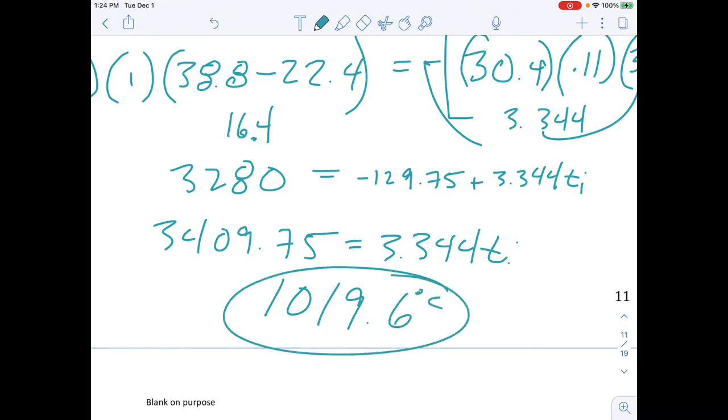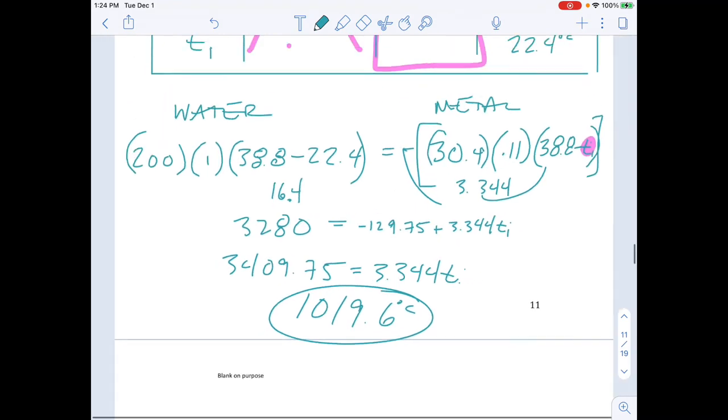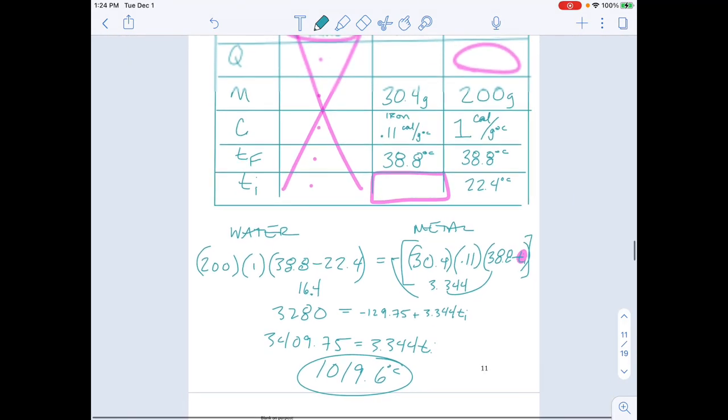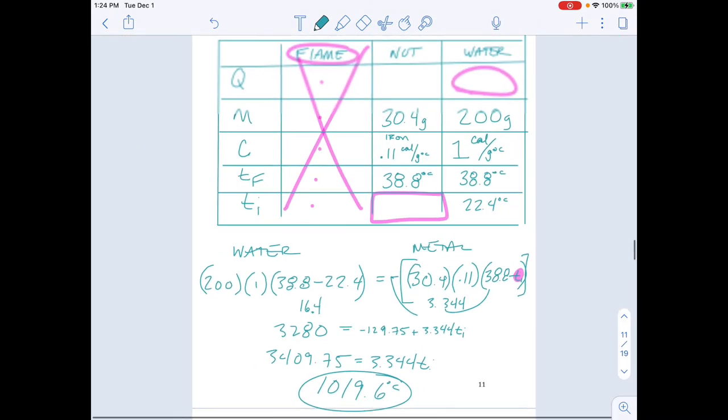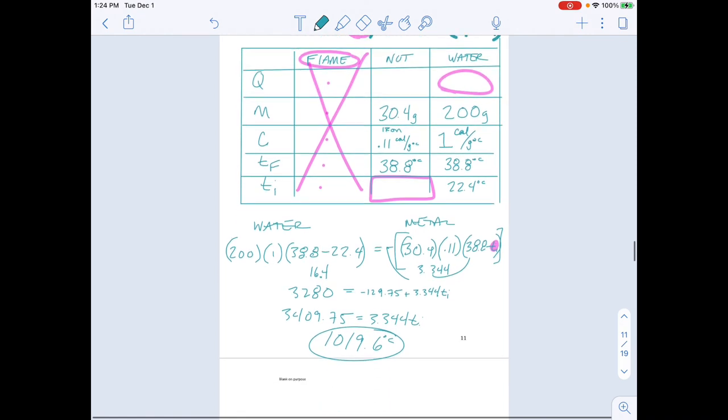That's degrees Celsius, which is pretty accurate. That can fluctuate at a Bunsen burner somewhere between 1,000 and 1,500. But we're pretty happy with that answer. So that is how we would work through and determine our initial temperature of a flame. Even though we don't have any information about it. We have the information about the metal nut and the water. We're able to set those two equal to each other. Solve for the TI of the metal. And that is equal to the flame temperature.